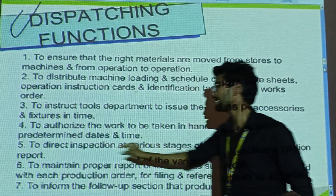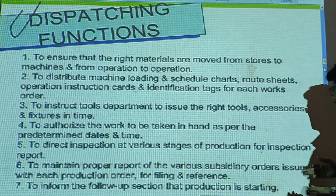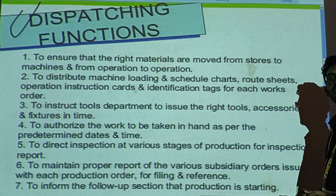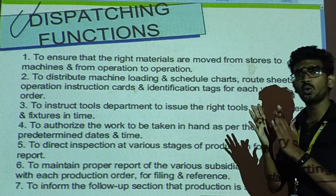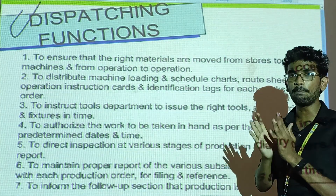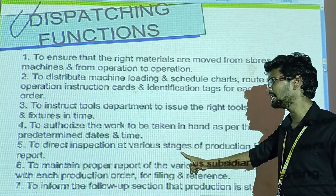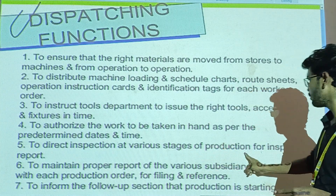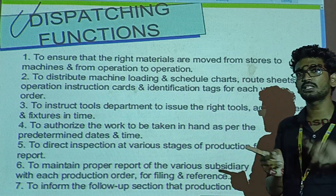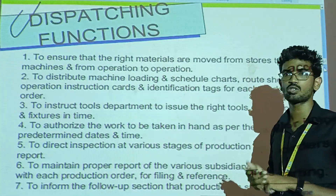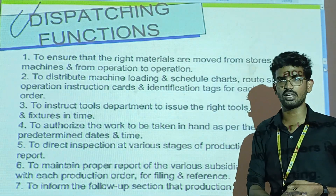The fifth function is to direct inspection at various stages of production and generate inspection reports. Once a part or operation is complete, inspection must be done at that stage. This involves the quality control or quality checking department, and it is the responsibility of the dispatching function.